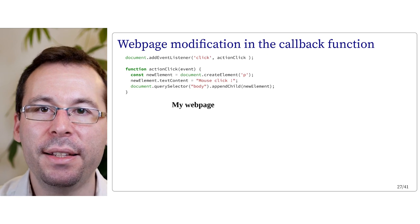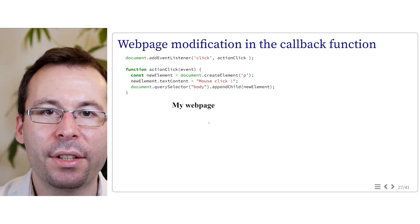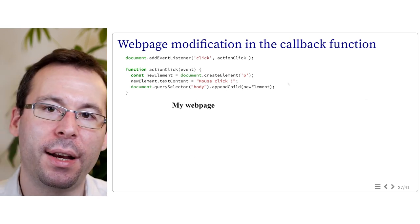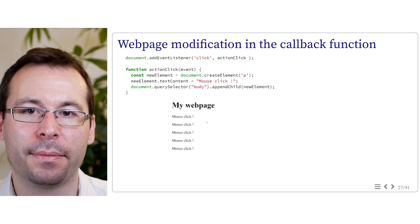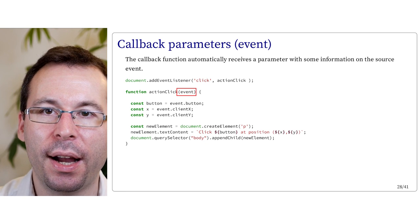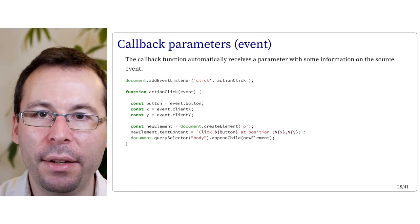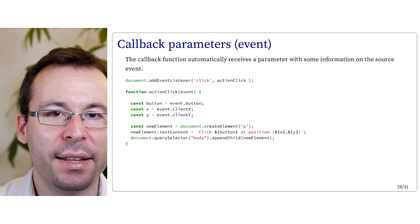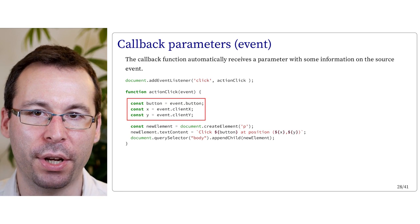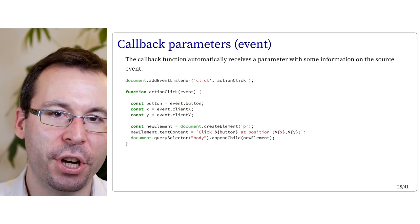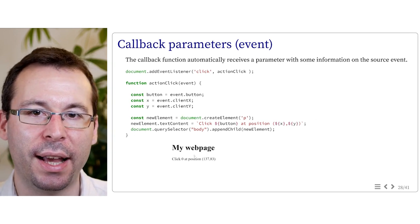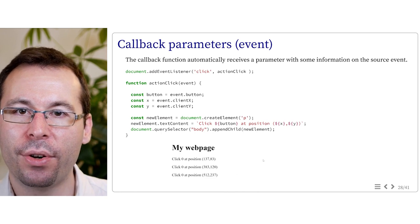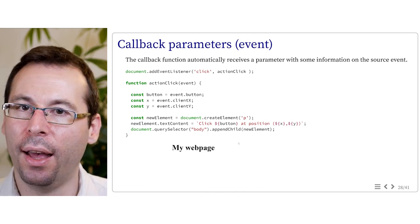We can easily adapt this code so that instead of displaying the message on the console, we actually create a new paragraph in the web page with the text 'mouse click'. Now every time the user clicks somewhere, the web page displays 'mouse click'. If you look at the code, you will see that the action function receives a parameter — I name it event, but you can name it as you want. In this parameter, you receive extra information associated with the event. For instance, in the case of the click event, we can retrieve which button was clicked (left or right), and the position in pixels using event.clientX and event.clientY.